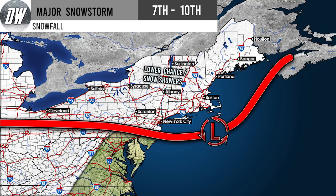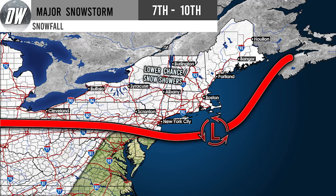For our second layer — the lighter blue — this is a moderate chance and could be major for these regions. This is where we're looking at the potential for accumulating snowfall. Cleveland, Buffalo, Syracuse, Albany, Scranton, New York City, Boston, Burlington, Portland, Bangor, and Holton are all included. New York City is the exception — being south of the system, you're only in that light snow chance with potentially just snow showers, as you'll be very close to the low pressure system with some mixing expected.